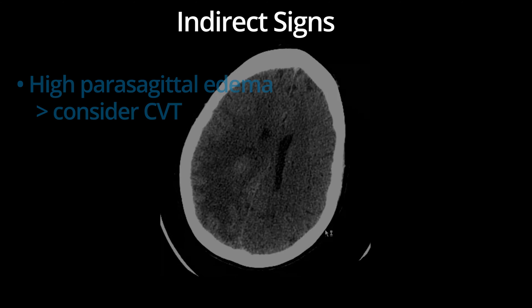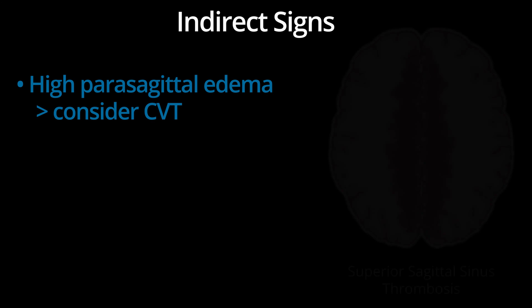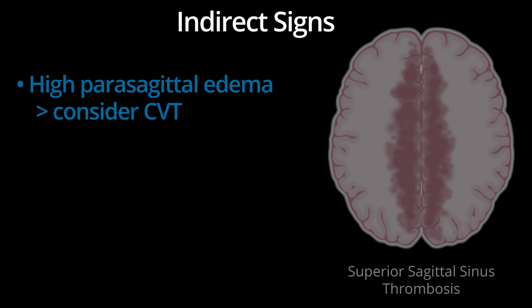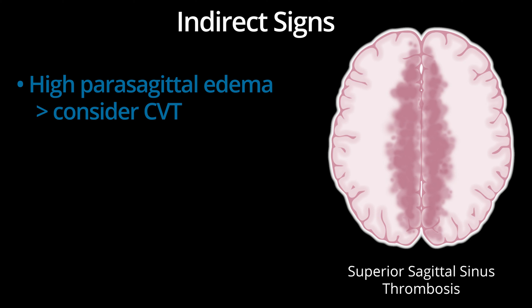When you see edema or hemorrhage in the high parasagittal gray and white matter, think about CVT. If there were areas of edema or hemorrhage bilaterally, this would raise your suspicion even further, as CVT frequently is bilateral.